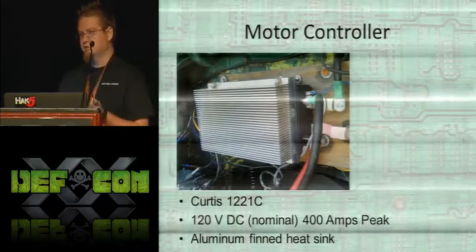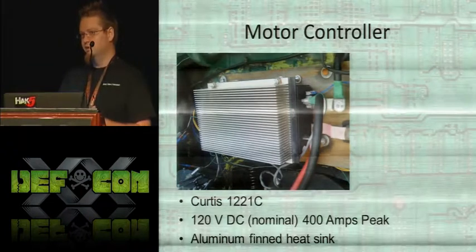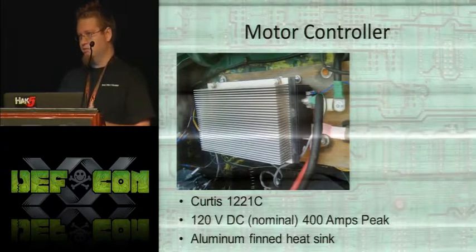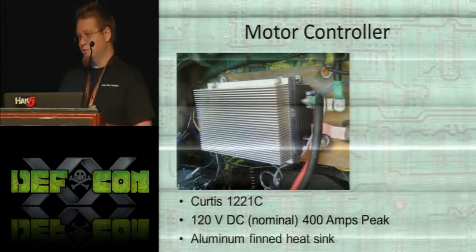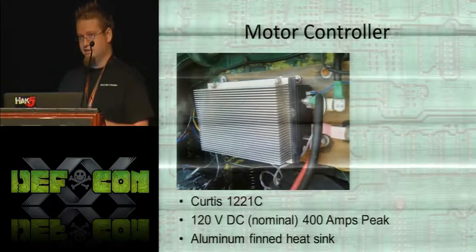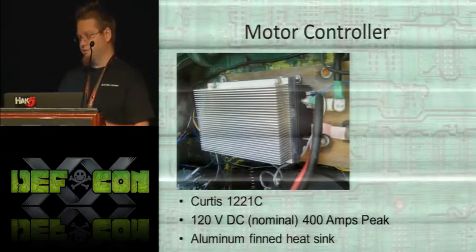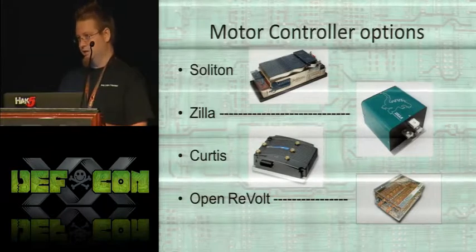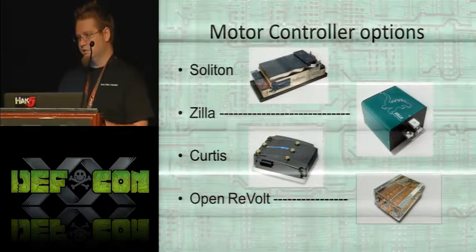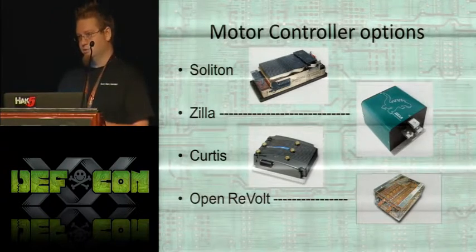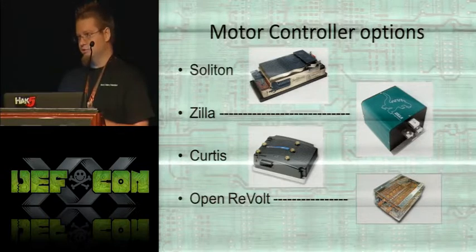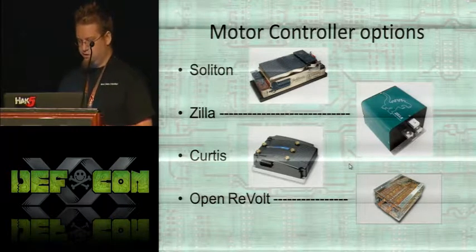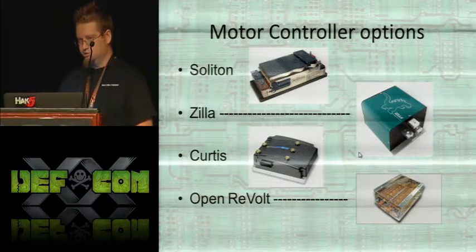The motor controller tells your motor how fast to go. It takes your full pack voltage and converts it into PWM for the motor to handle. I'm running a Curtis 1221C, and pretty much all DC motor controllers need some extra cooling, which is why it has a heat sink. You can add a fan to the heat sink if you need more cooling, but I didn't need that. Common options include the Soliton controllers — considered top of the line — with models including a Junior, Soliton One, and the new Shiva Destroyer designed for racing that can push over a megawatt of power. The Zillas are also high power. One very popular option now is the OpenRevolt, which is an open source controller.